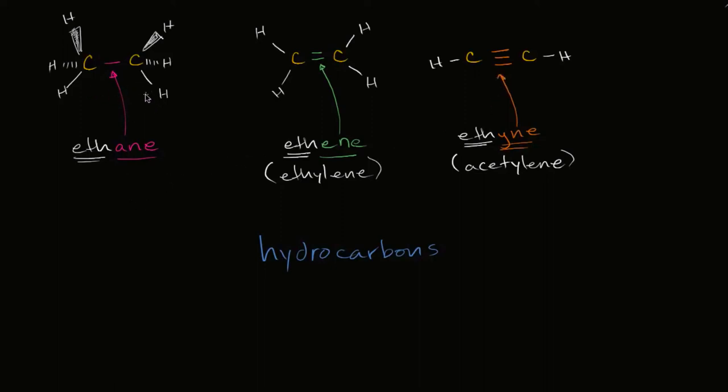The general term for a carbon chain that has no double or triple bonds is an alkane. This is a specific form of an alkane, ethane, that has two carbons. If the general form for carbons that have a double bond, that's an alkene.